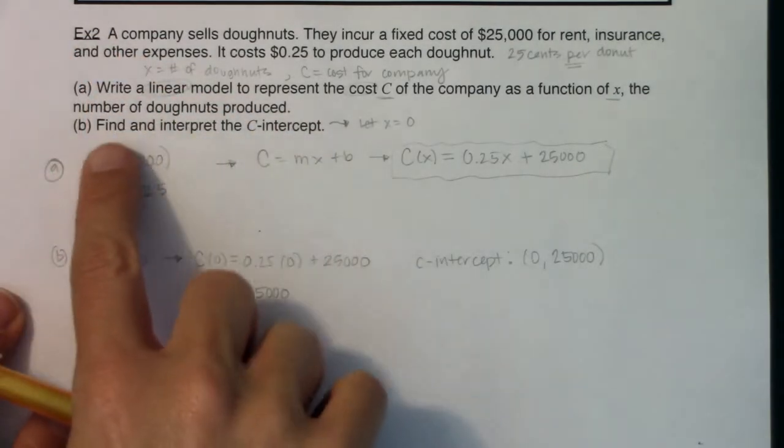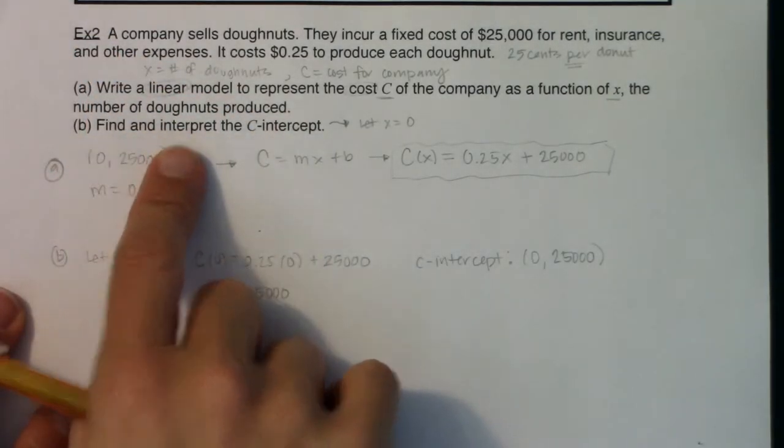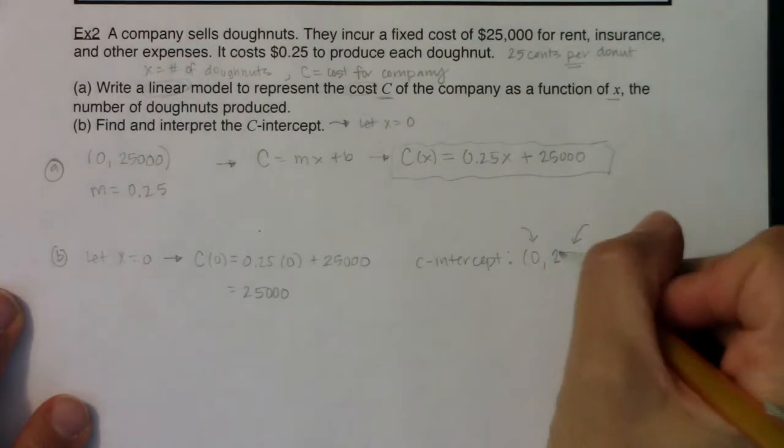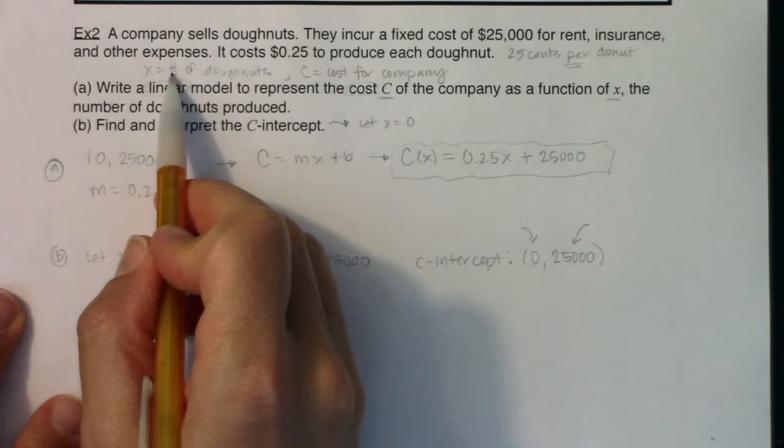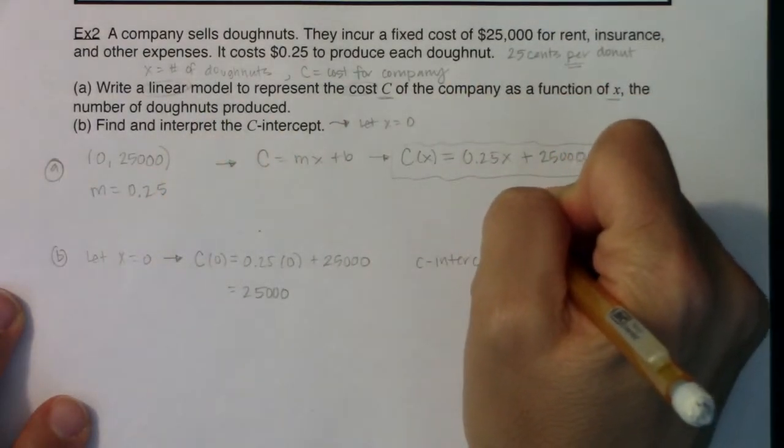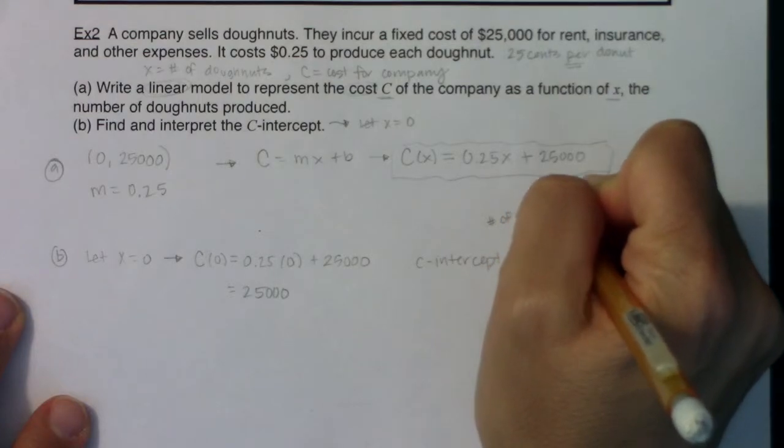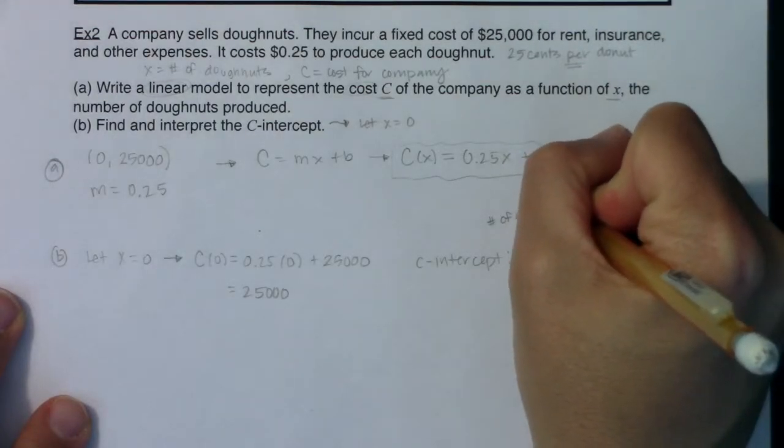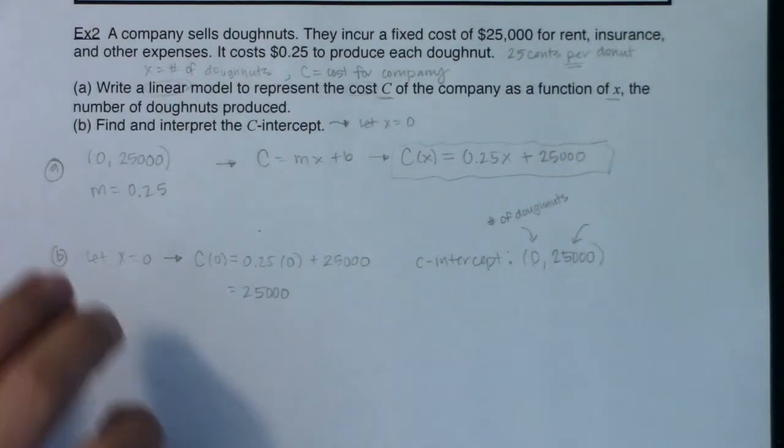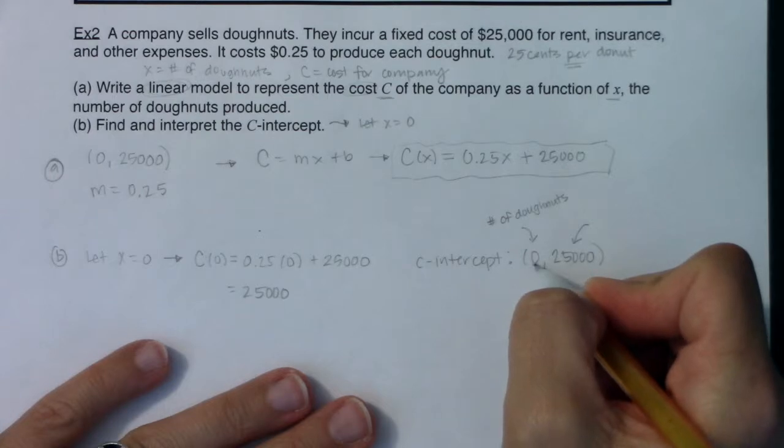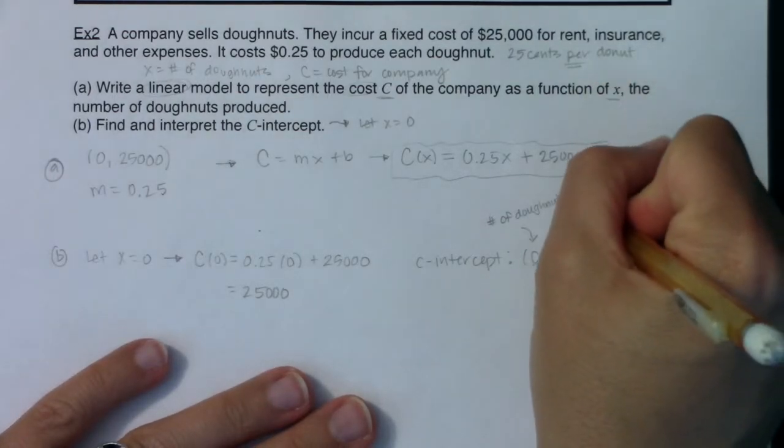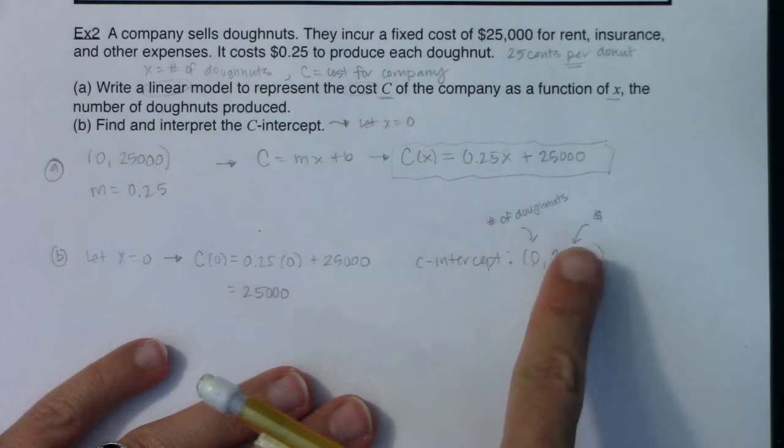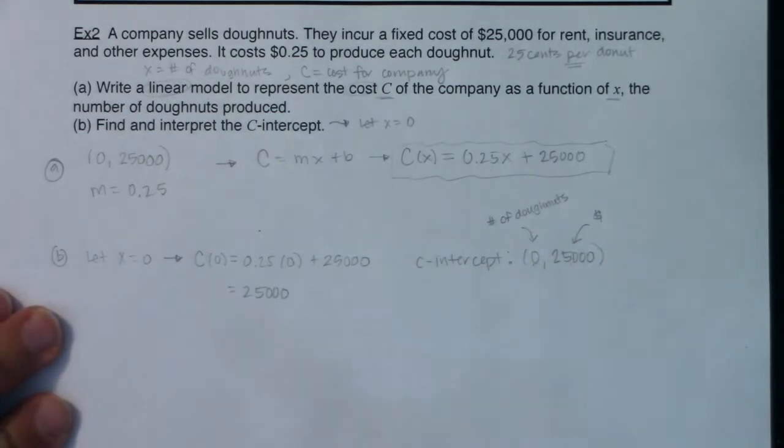So there's our C-intercept. But I want to answer every question asked of me. So not only did it ask me to find it, it said to interpret it. So let's just think about the units on each of these. What are the units on the 0? What are the units on the 25,000? So the 0, that's in the x-position, and I see this is number of donuts. So my units here are number of donuts. So I have produced zero donuts. And the 25,000, the units on that are dollars.